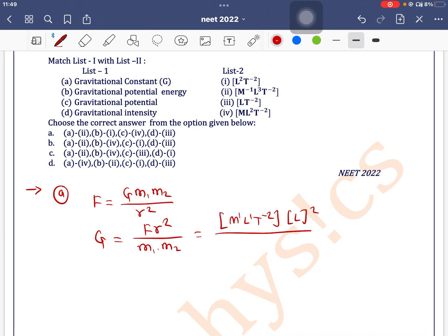r square is L^2 and this is M^2. So if we solve this we'll get M^-1 L^3 T^-2. M^-1 L^3 T^-2, so a2. Here we have a2.